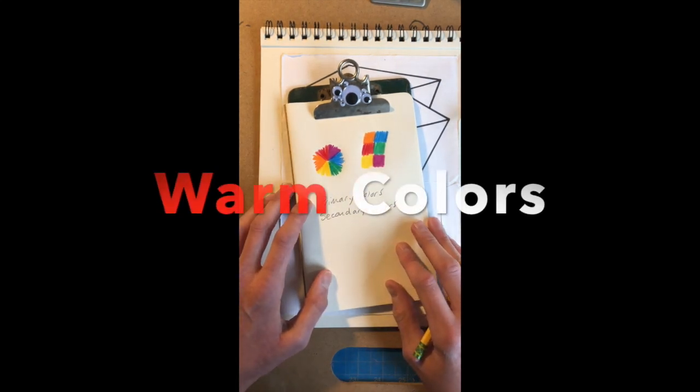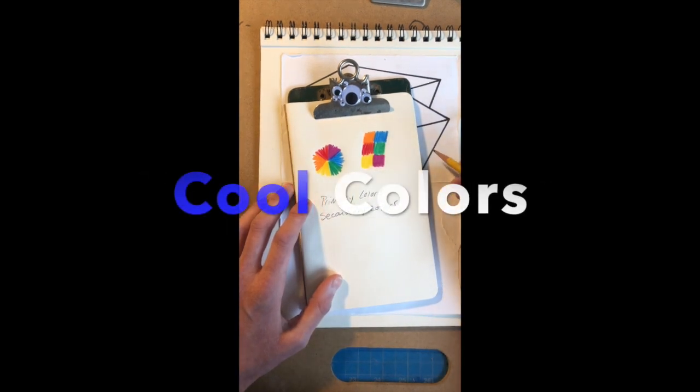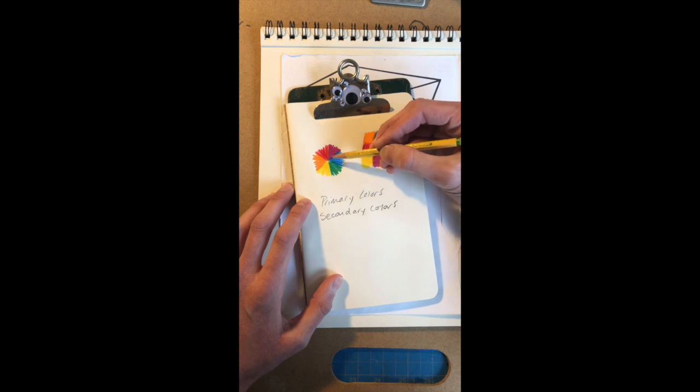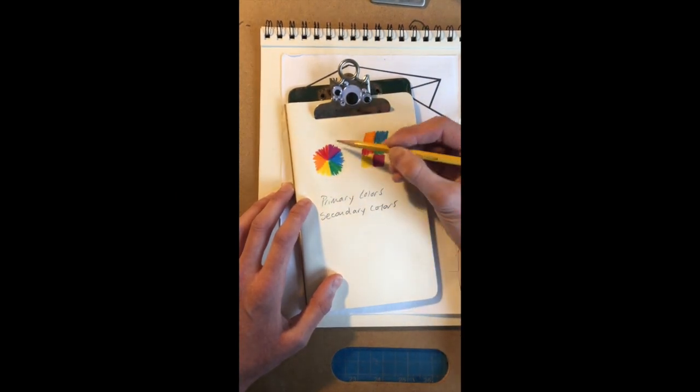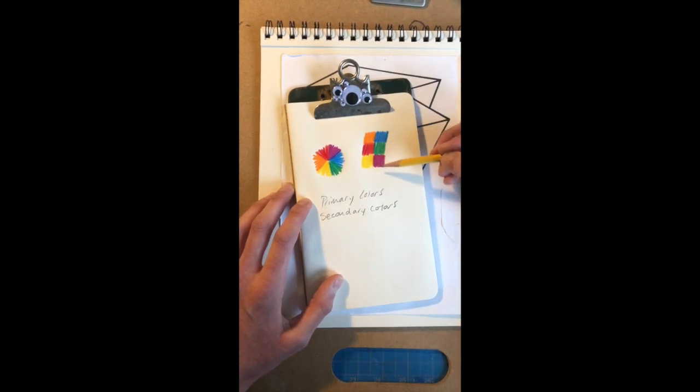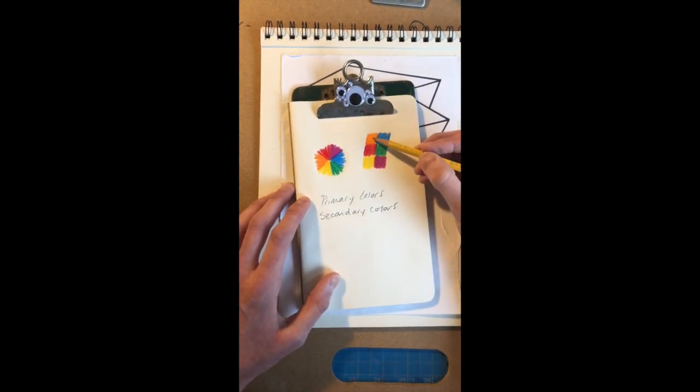We have warm colors and we have cool colors. And if you look carefully on the color wheel, a line goes through it that separates our warm colors from our cool colors. And if you look over here as well, I have my cool colors on one side and my warm colors on the other side. And our warm colors are composed of orange, red, and yellow. Our cool colors are blue, green, and purple.